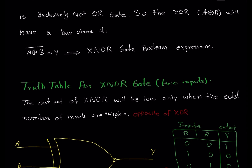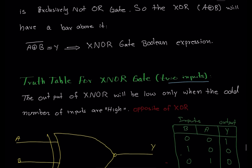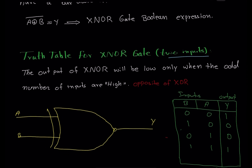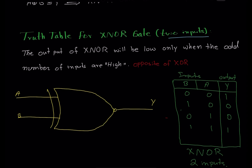Moving on to the XNOR gate truth table — we will discuss a two-input example. The output of the XNOR gate will be low only when the odd number of inputs are high. If we remember, for the XOR gate the output will be high only when the odd number of inputs are high. Since the XNOR gate is the inverted XOR gate, the output of the XNOR gate will be low only when the odd number of inputs are high — it's the exact opposite of the XOR gate.